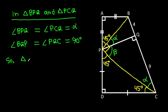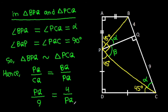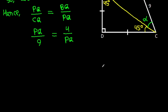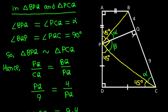Triangle BPQ is similar to triangle PCQ. Hence PQ over CQ equals BQ over PQ, so PQ over 9 equals 4 over PQ. Cross-multiplying, PQ times PQ equals 9 times 4, so PQ squared equals 36, and therefore PQ equals 6.